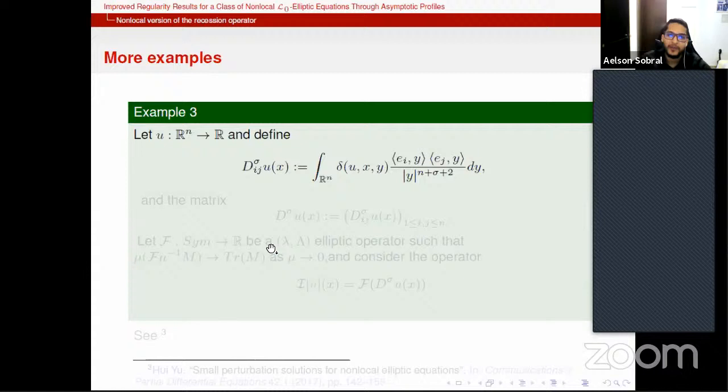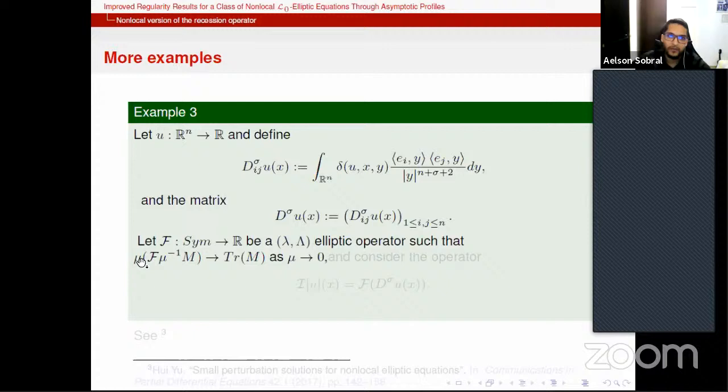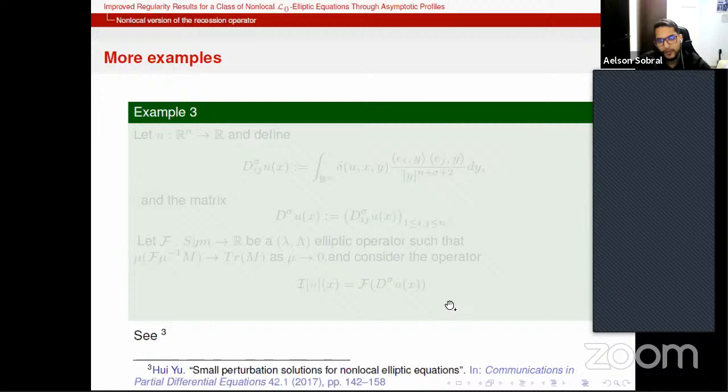The third example is a local disguise for nonlocal equations, and it goes like this. Let's say you have a function from R n to R u, and define this quantity here, where E i and E j are the vectors from the canonical basis of R n. And now consider this symmetric matrix here. Now take any lambda-Lambda elliptic operator such that the recession goes to the trace function, and consider this operator here. This operator is L0 elliptic such that the recession is the fractional Laplacian. And we highly indicate this paper here from Ou in CPDE for another interesting results about this type of equivalence.